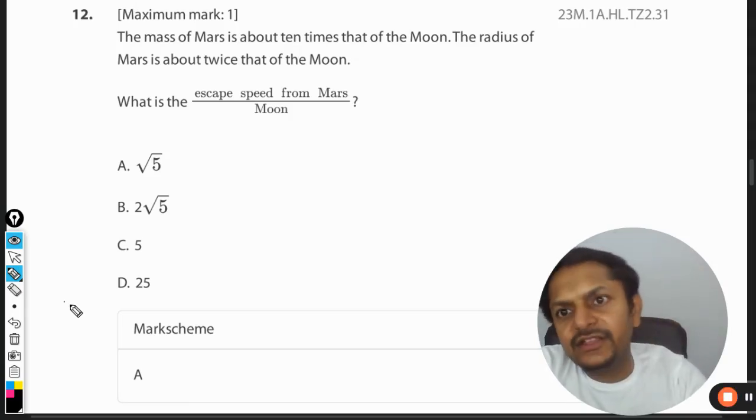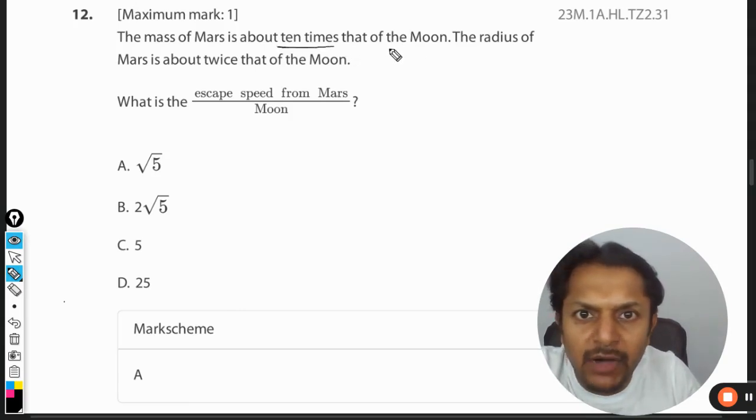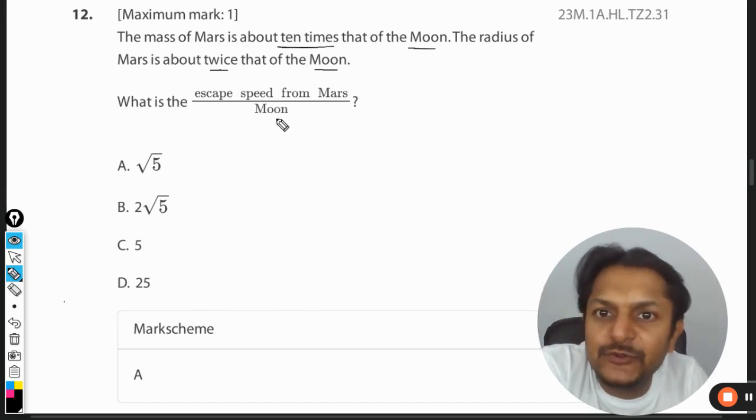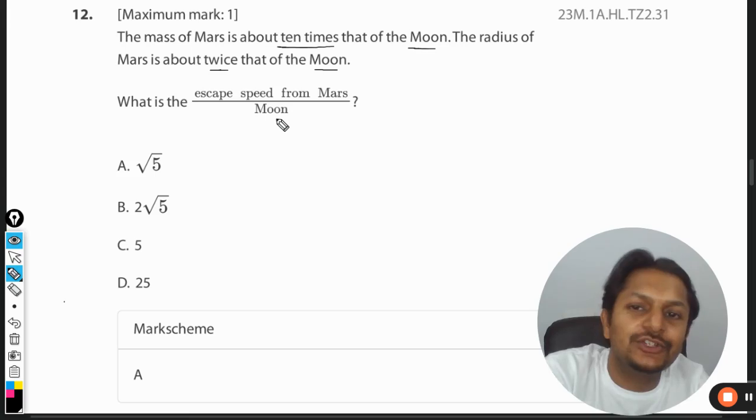Okay dear students, let's see what is there in this question. The mass of Mars is about 10 times the mass of the Moon. The radius of Mars is twice that of the Moon. What is the escape speed from Mars divided by the escape speed from the Moon? So don't get confused.